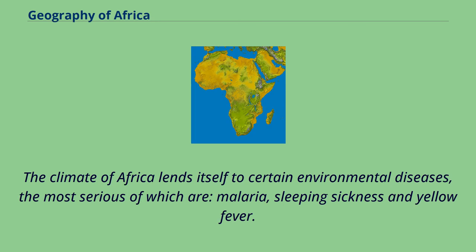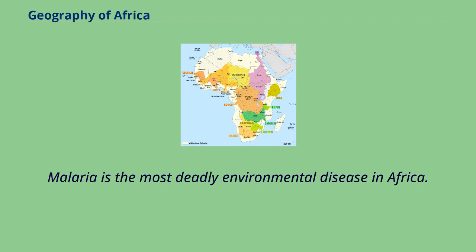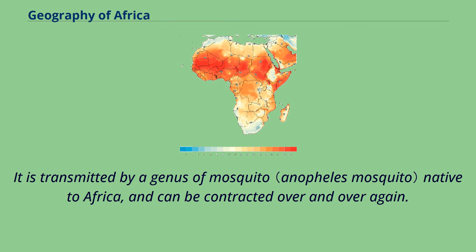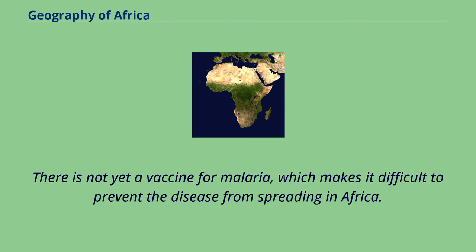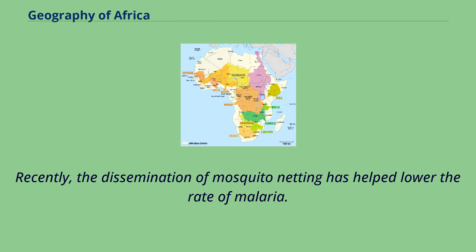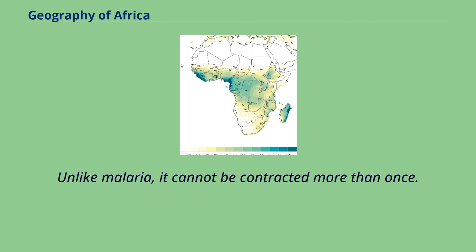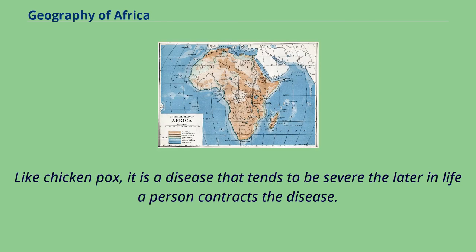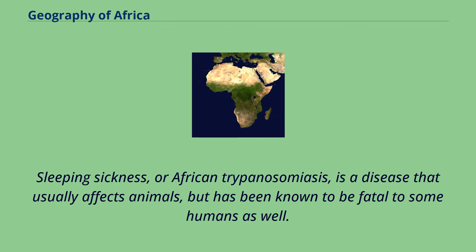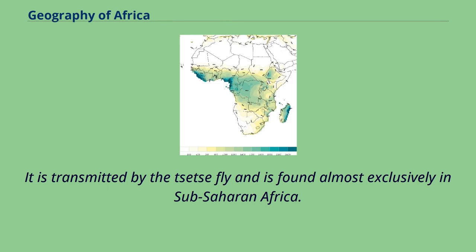The climate of Africa lends itself to certain environmental diseases, the most serious of which are malaria, sleeping sickness and yellow fever. Malaria is the most deadly environmental disease in Africa. It is transmitted by a genus of mosquito native to Africa and can be contracted over and over again. There is not yet a vaccine for malaria, which makes it difficult to prevent the disease from spreading in Africa. Recently, the dissemination of mosquito netting has helped lower the rate of malaria. Yellow fever is a disease also transmitted by mosquitoes native to Africa. Unlike malaria, it cannot be contracted more than once — like chicken pox, it is a disease that tends to be severe the later in life a person contracts it. Sleeping sickness, or African trypanosomiasis, is a disease that usually affects animals, but has been known to be fatal to some humans as well. It is transmitted by the tsetse fly and is found almost exclusively in sub-Saharan Africa.